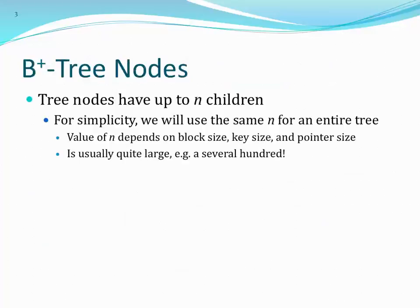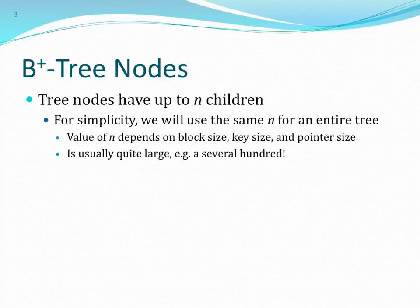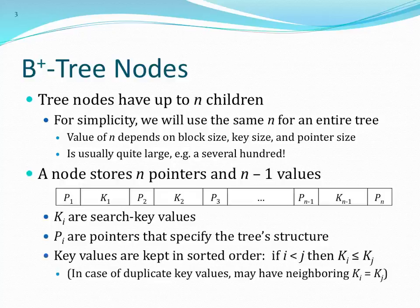Tree nodes have up to N children. The benefit of this design is that N typically is in the hundreds. Think of an 8K page with a key size of 8 bytes and a record pointer of 8 bytes — that's 16 bytes. Divide that into 8K and you have a large branching factor. That means your tree gets to be very shallow and very broad, resulting in very few IOs to look up values.